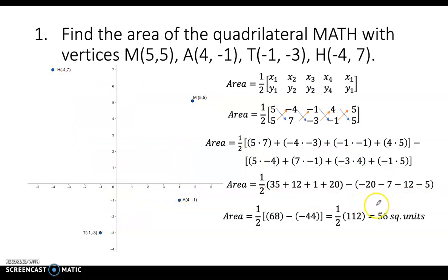All right, so the answer should be 56 square units. So 68 minus negative 44 is 112, then you divide it by 2 or multiply it by one half. As you can notice, I edited the part of this example, so I cleared out all the stuffs here.